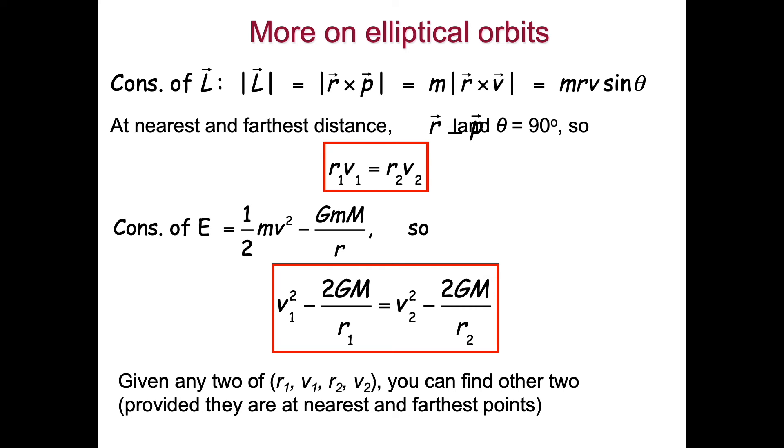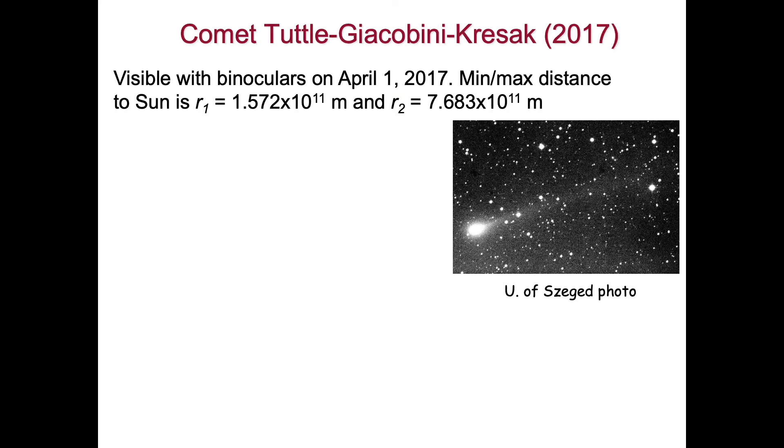Given any two of these variables, R1 and V1, R2 and V2, any combination of those two, you can find the other two, provided that they are at the nearest and furthest points. So if I give you the R1 at the nearest point and the V2 at the furthest point, you have enough to derive the speeds and radii at all of the other points.